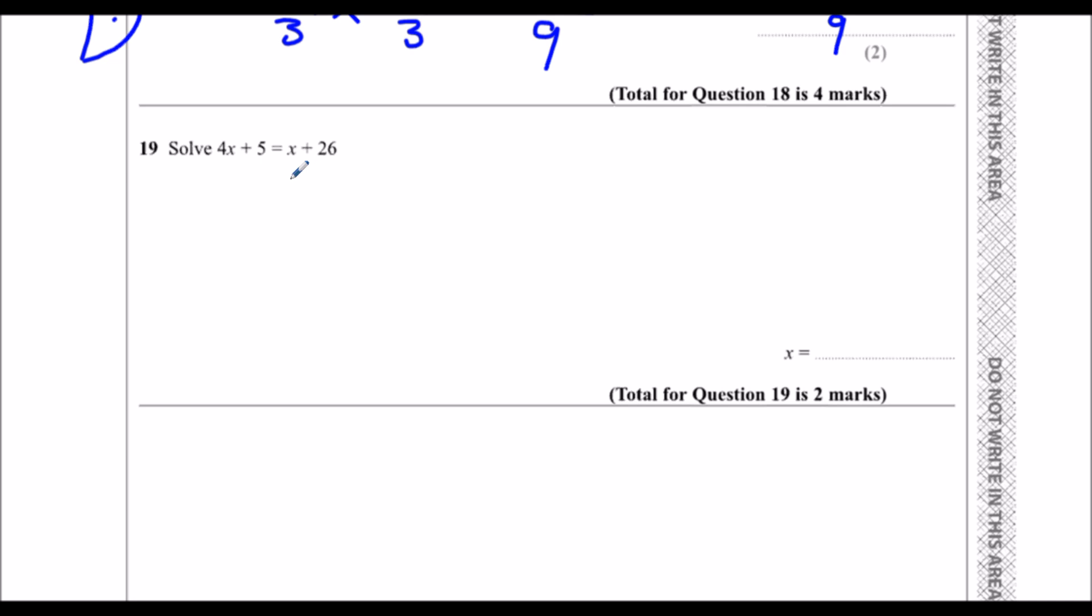I've got 4x here, I've got 1x here, so I'm going to take away 1x from both sides of the equation. That's going to leave me with 4x take away x is 3x plus 5, equals x minus x is nothing, so I've just got 26 left over here.